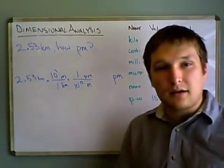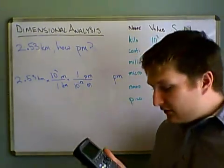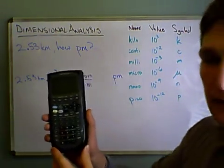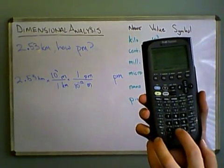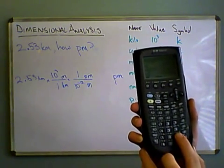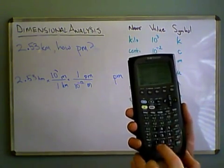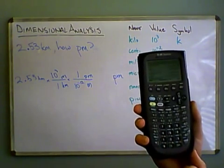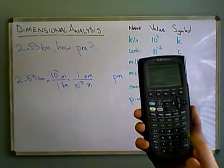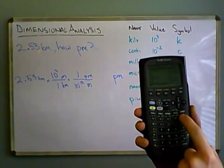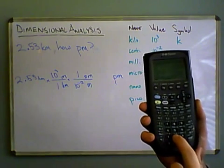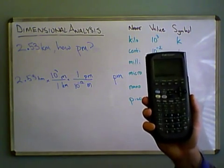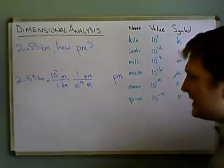So now, I'm just going to plug that right into the calculator, the same way we did in the previous video. Only this time, I'm going to be using the caret key. So I start with the beginning, which is 2.53 multiply by 10 caret 3, divide by 1, multiply by 1, divide by 10 caret negative 12, I hit enter, and I get 2.53e15.